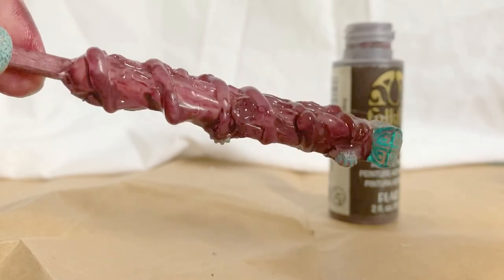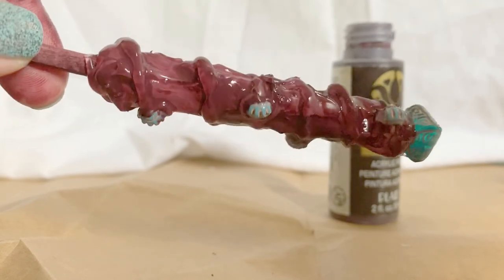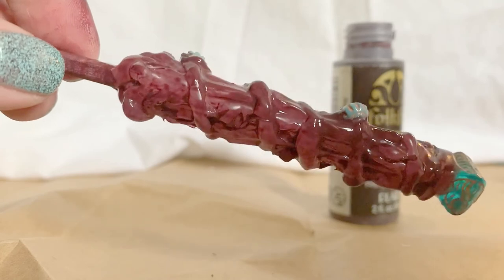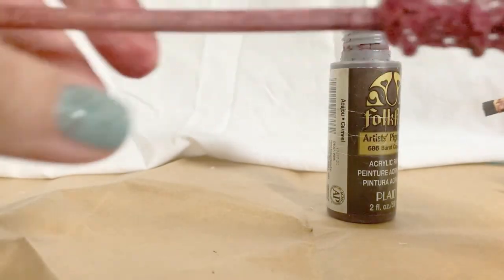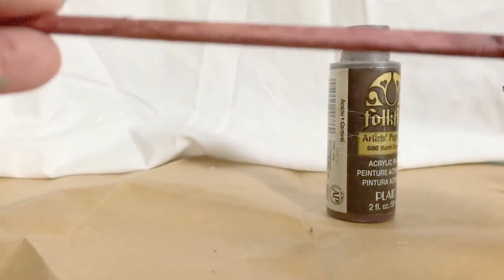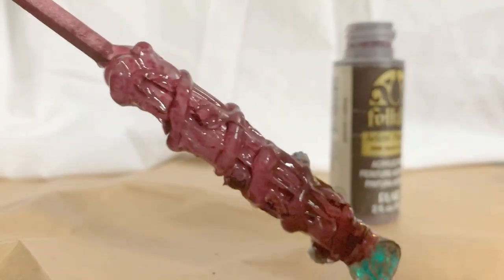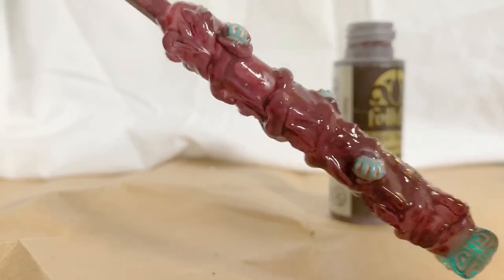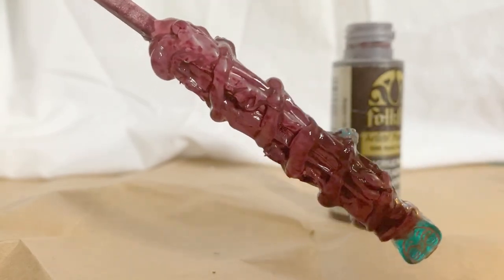Okay here you can see I've got my entire glue handle all coated with my first coat of paint. I've also painted all the way up to the tip of my wand with one coat of paint. I'm going to let it dry thoroughly before I move on to my next layer of paint to give it the look that I want.